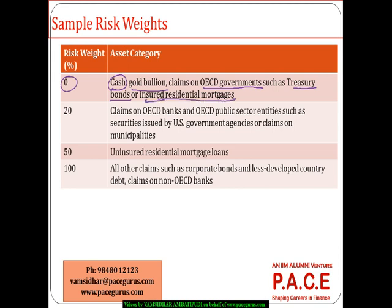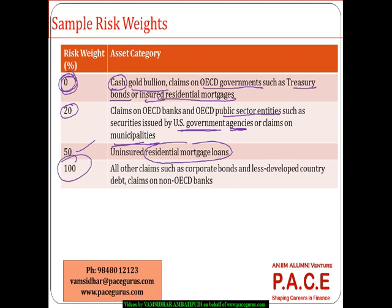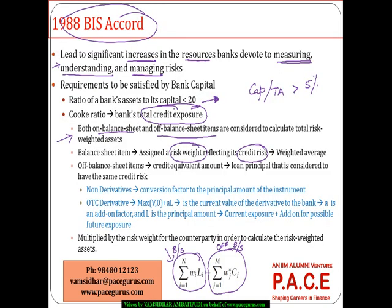For example, cash, gold bullion, claims on OECD governments, treasury bonds, and fully insured residential mortgages carry a zero risk weight. Claims on banks and public sector entities such as US government agency securities or municipality claims have a slight risk, assigned 20%. Residential mortgages without insurance carry 50%, and all other corporate bonds are assigned 100% risk weight. Depending on the type of asset or loan, a risk weighting reflecting the credit risk is assigned to each.